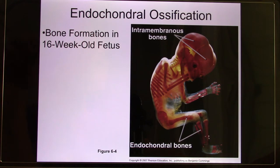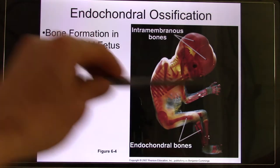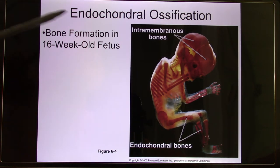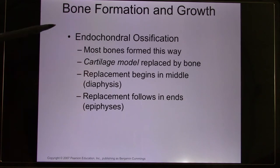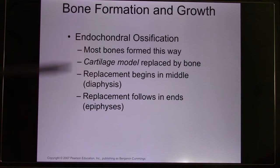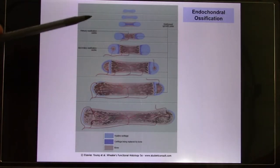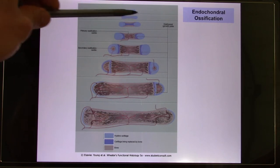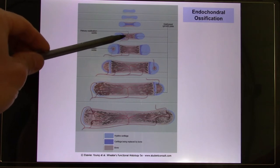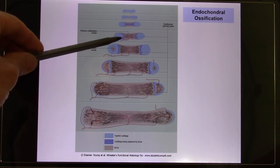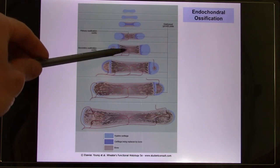Most bones in the body go through endochondral ossification. The name tells you they form cartilage first. That's how most bone synthesis occurs. Looking at the picture: they start from cartilage, and the inside part of the cartilage becomes the primary ossification center. Blood vessels grow in and it becomes bone structure.